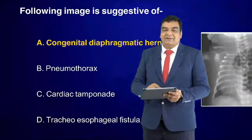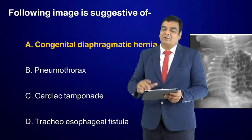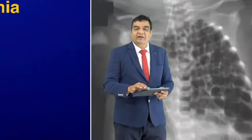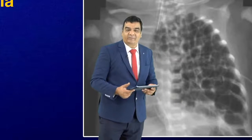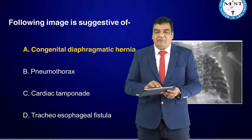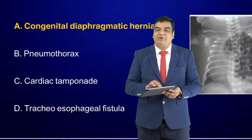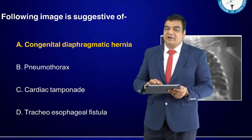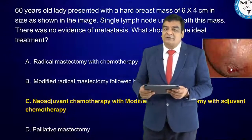An overlapping pediatrics question showed an image where the stomach and intestines had gone up into the thorax in a small baby. You can see bowel loops in the thorax — this is clearly congenital diaphragmatic hernia, not pneumothorax, cardiac tamponade, or tracheoesophageal fistula.